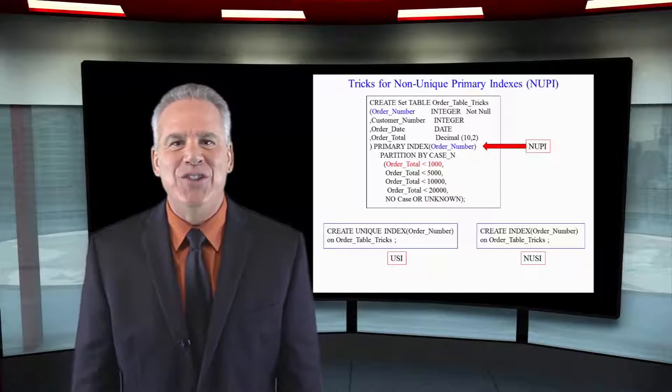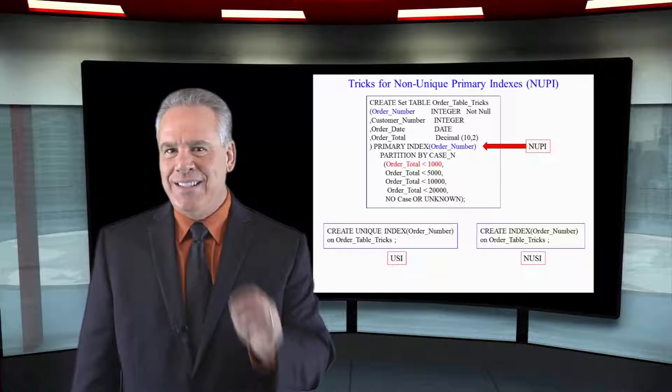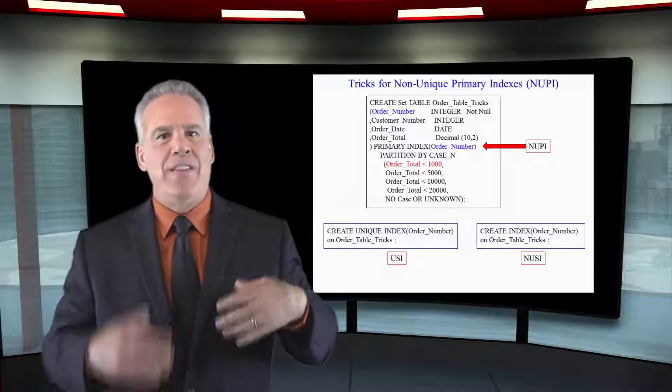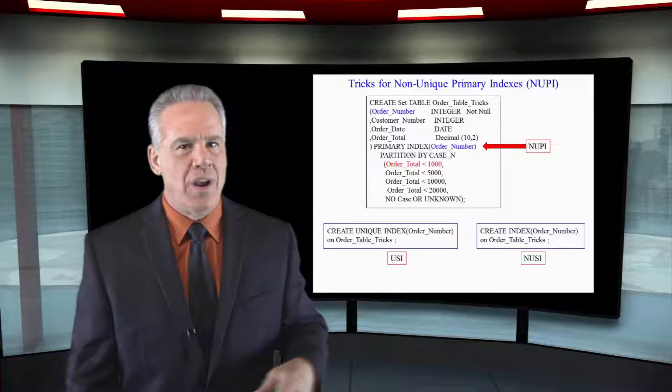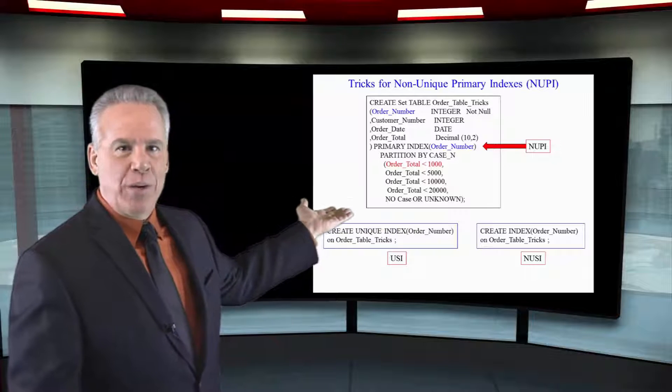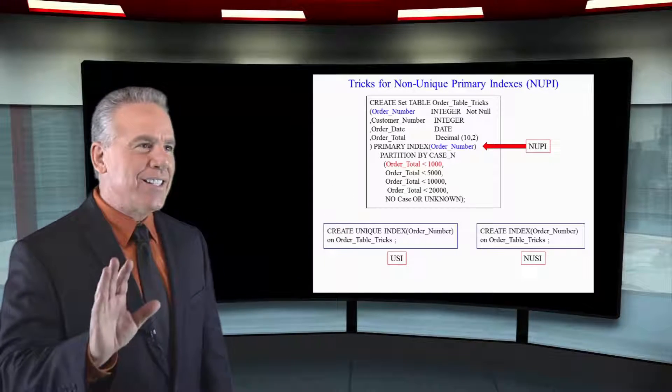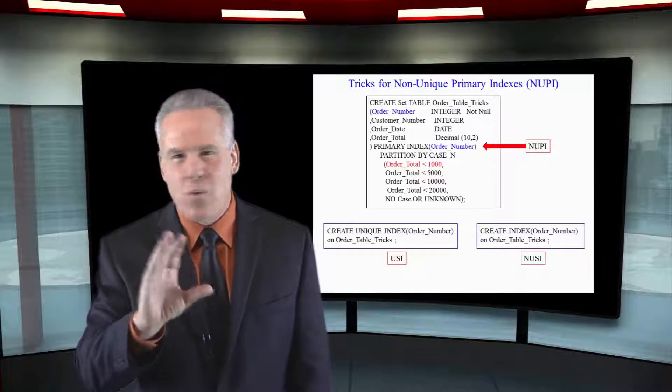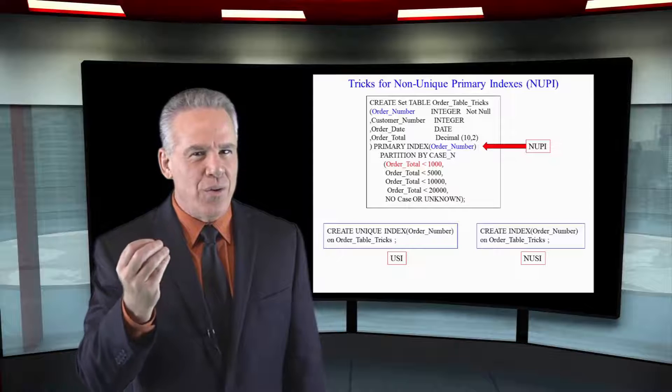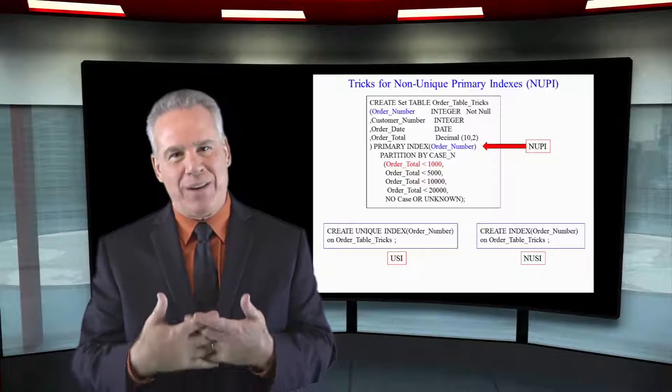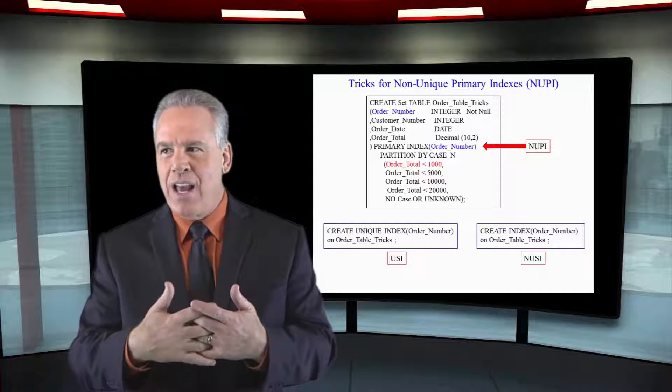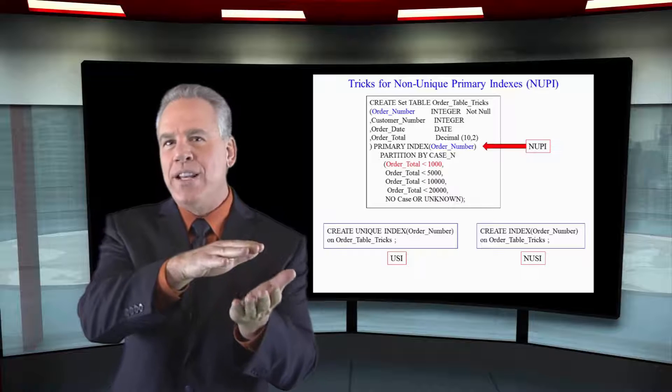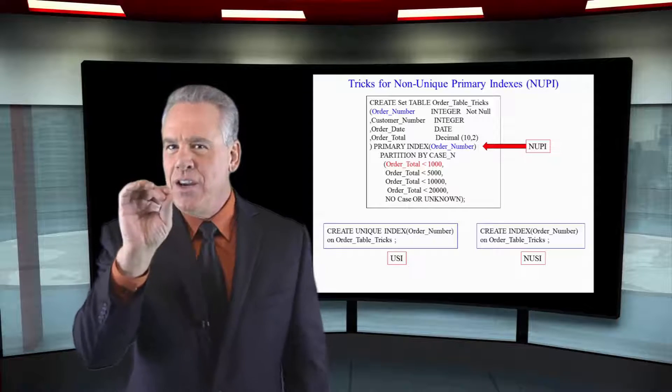You're going to see something ingenious here. Take a look. We know that most of our partition tables are going to have to have a non-unique primary index. In a sense, this table has unique order numbers, so I wish it was a unique primary index. As a matter of fact, I can't look things up quite as fast, because here's the way it works.